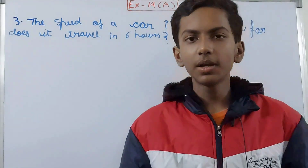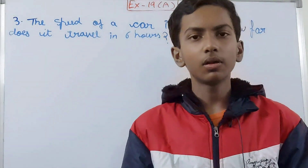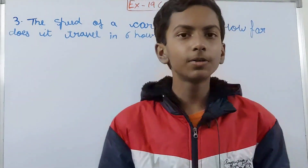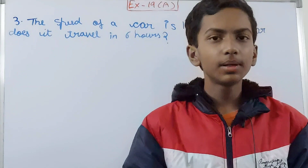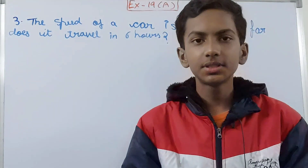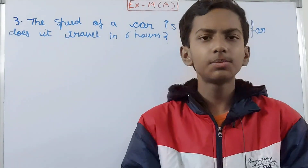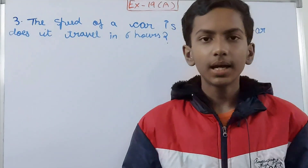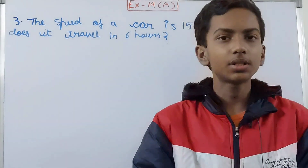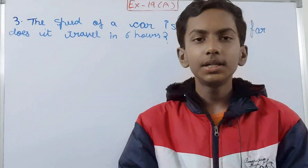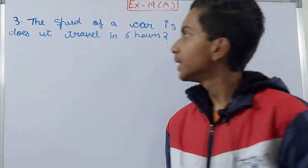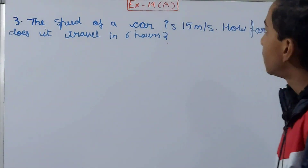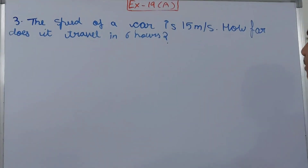Hello friends, welcome back to my YouTube channel Lockyer Learning. In this video we are going to solve ICIC mathematics class 7, chapter 19, Speed Time and Distance, exercise 19, equation 3.